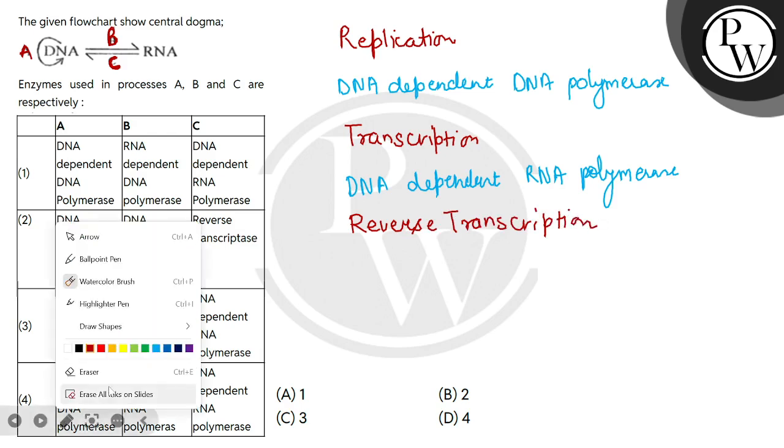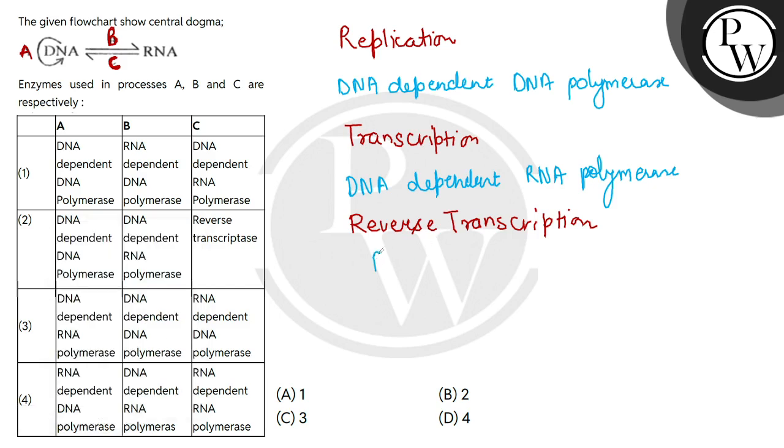Now this process will use which enzyme: reverse transcriptase. So we will see these three enzymes, which are correct in which column. Here is DNA-dependent DNA polymerase and RNA polymerase is correct, this is wrong. Second, we can see DNA-dependent DNA polymerase is correct, DNA-dependent RNA polymerase is correct, reverse transcriptase is correct. Three processes: this is our A, this is our B, this is our C. This is exactly the correct answer, which is 2.